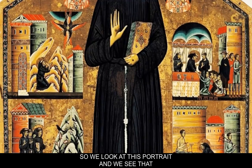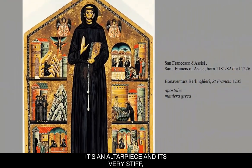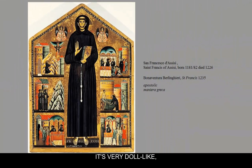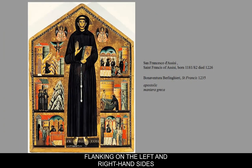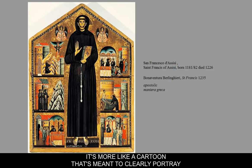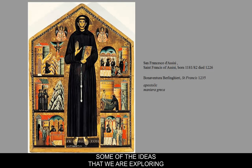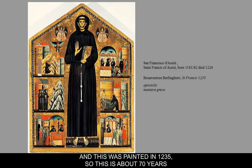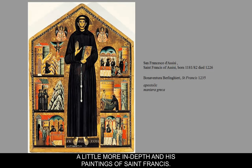Looking at this altarpiece portrait, we see it's very stiff and doll-like — the figures are unrealistic. The scenes flanking St. Francis on the left and right are basically unrealistic, with no creation of deep space. It's more like a cartoon meant to clearly portray ideas about his life. This was painted in 1235, about 70 years before Giotto, whose paintings of St. Francis we'll study in more depth.